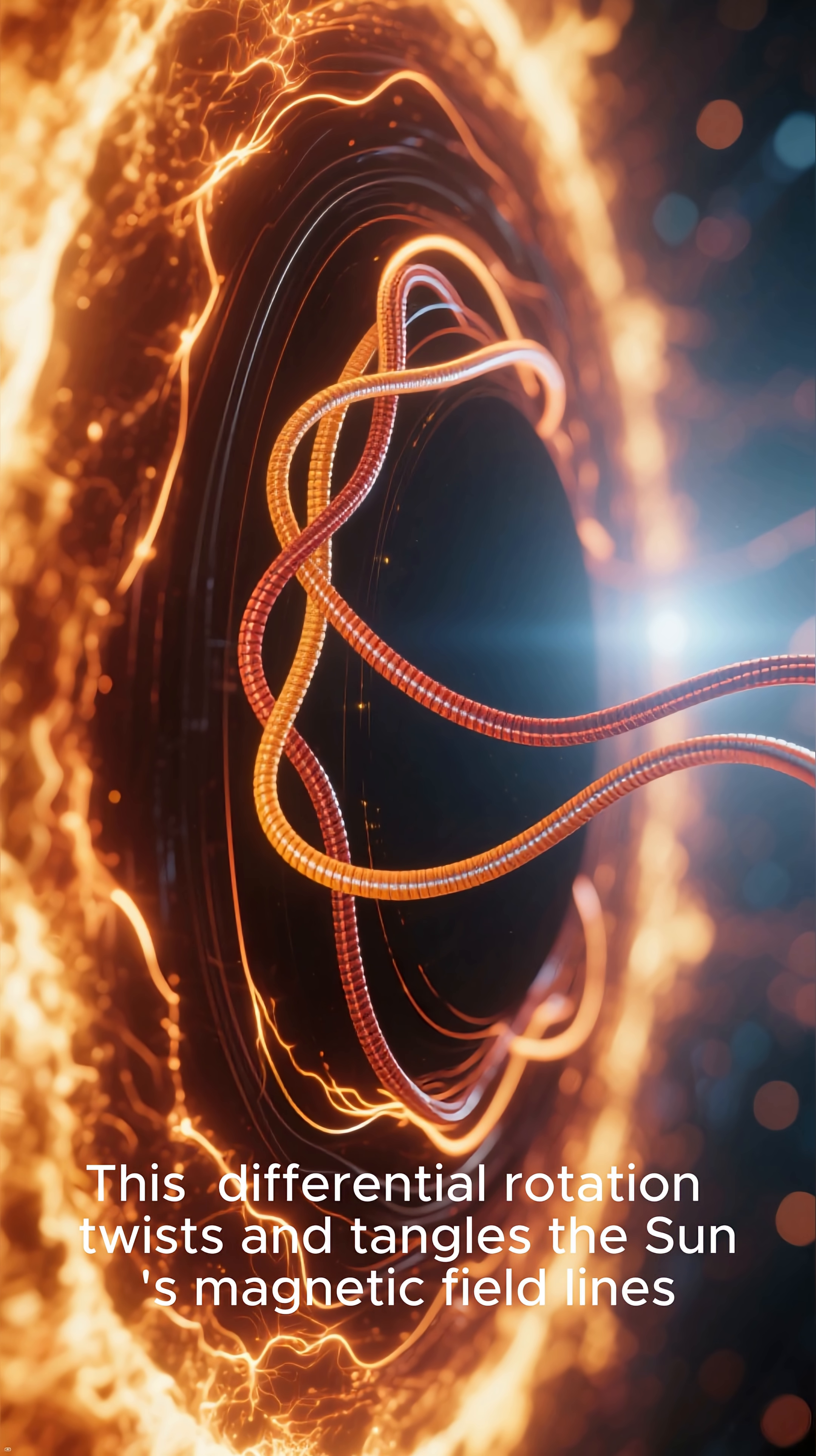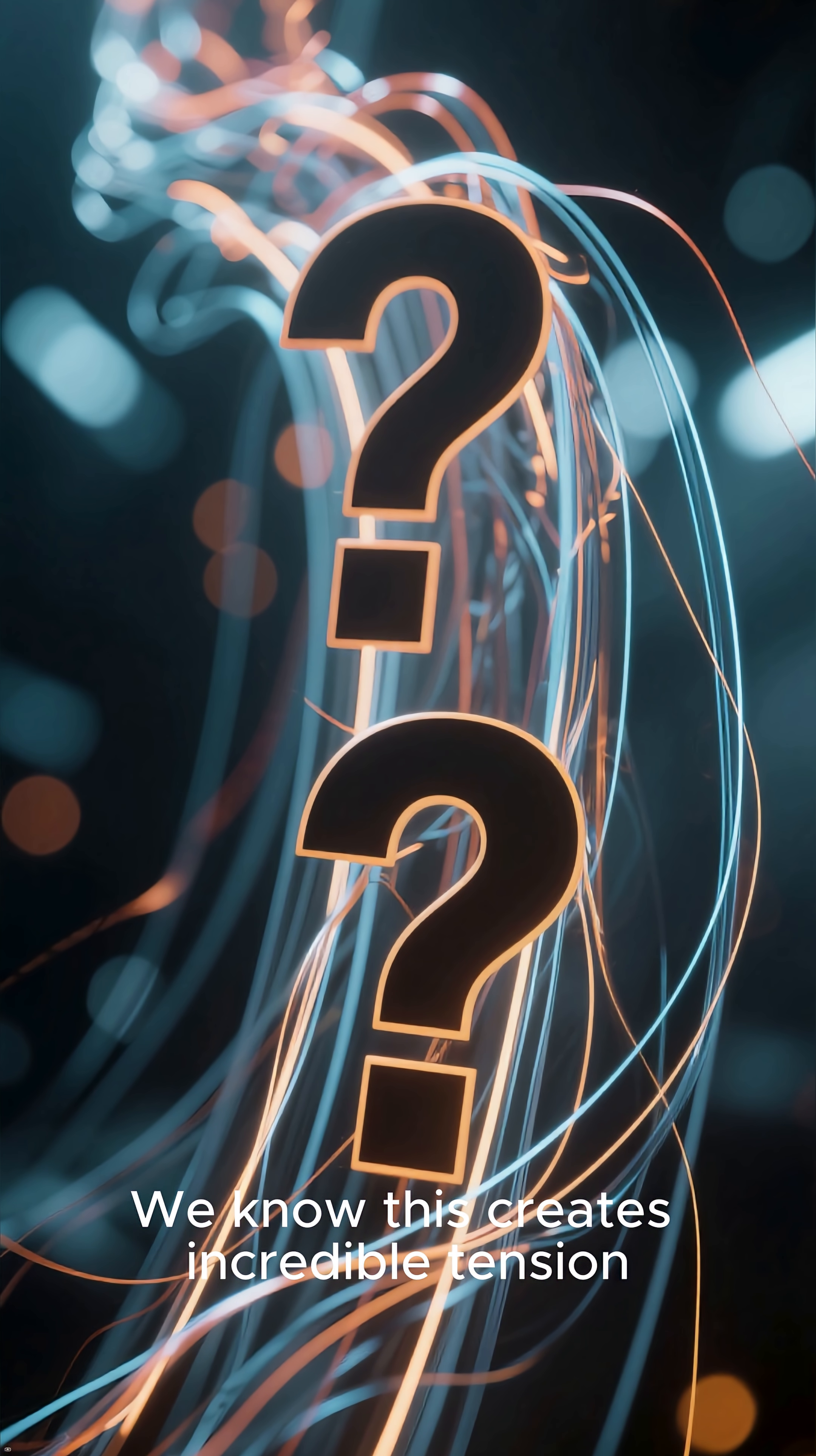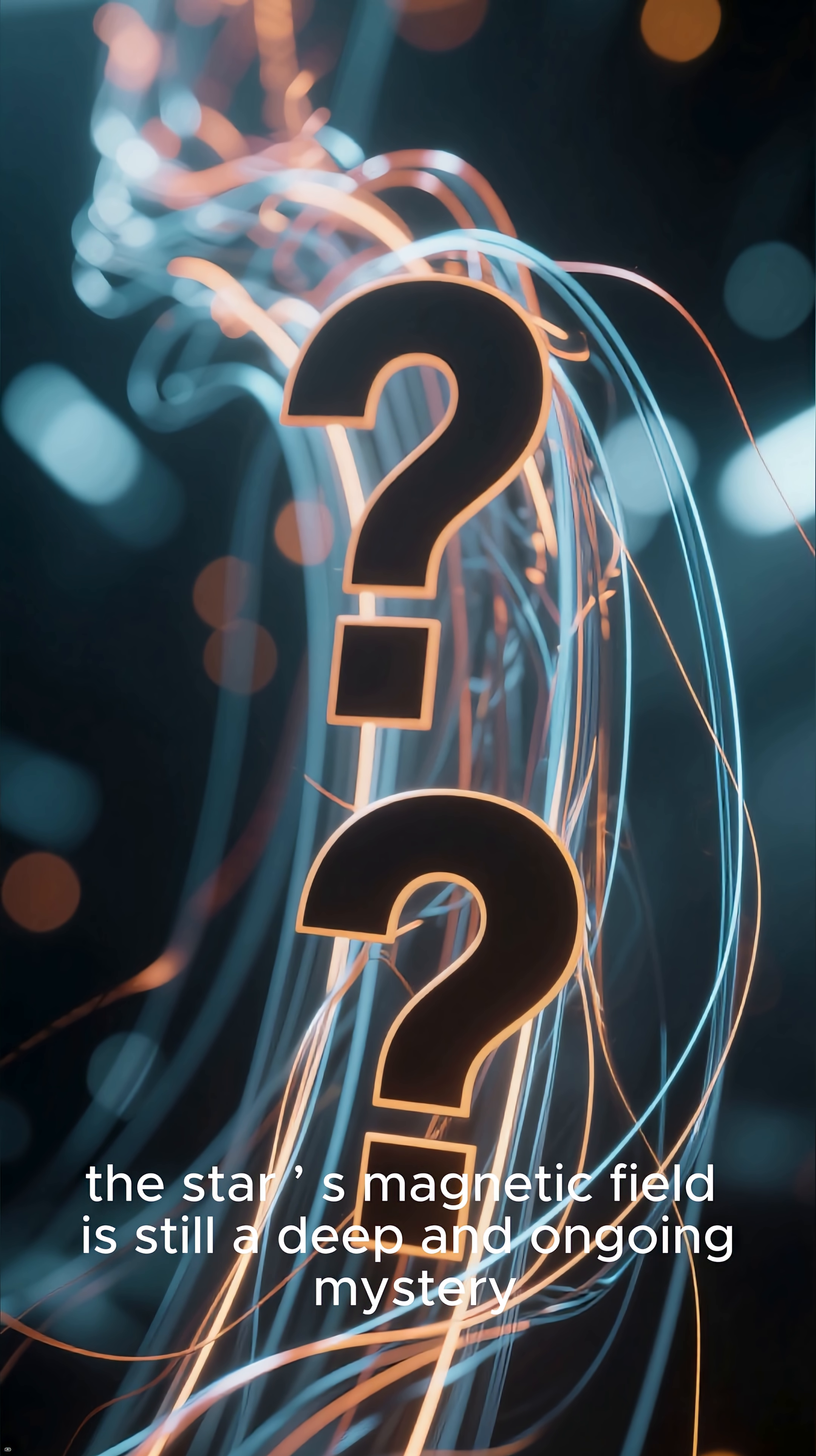This differential rotation twists and tangles the sun's magnetic field lines, winding them up like elastic bands. We know this creates incredible tension, but the precise way this chaotic movement generates the star's magnetic field is still a deep and ongoing mystery.